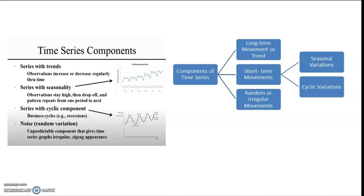So we may have series with trends and in that observations increase or decrease regularly through time. Then we have series with seasonality and observations stay high then drop off and pattern repeats from one period to the next.